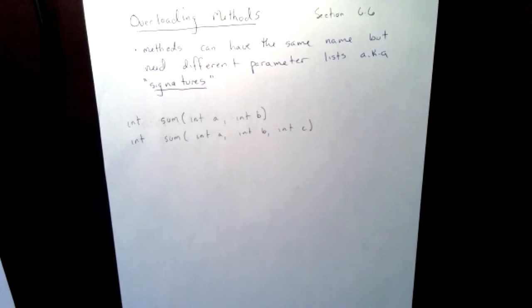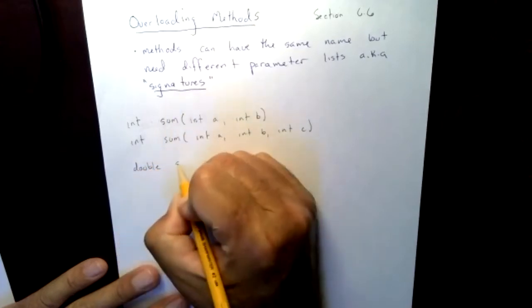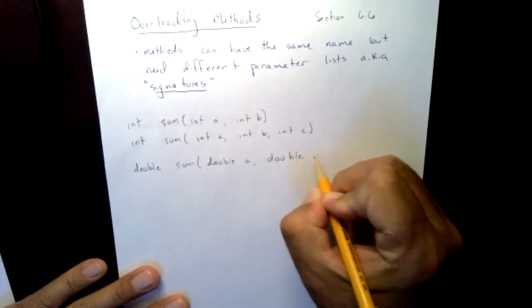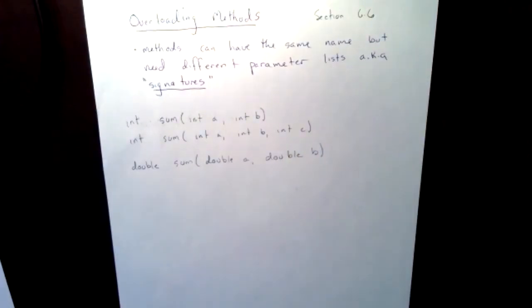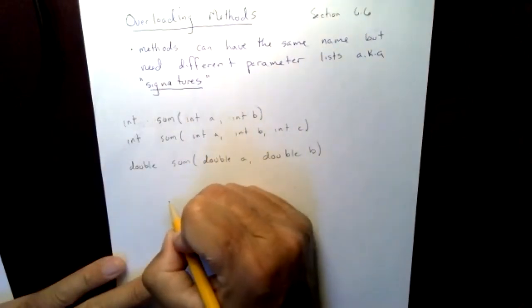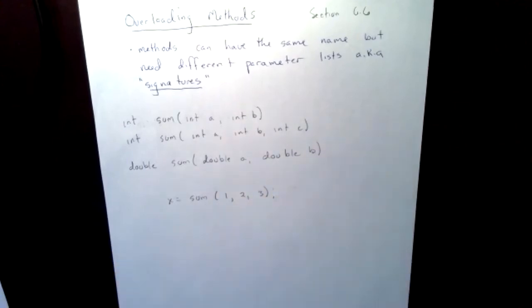So I'm allowed to have this. Could I have another sum that actually will return a double, and inside of this sum, I might have double A and double B? We all know what sum does. It's going to add them together, but this is allowing me to have different uses for the same concept, having different data types. So I'm allowed to overload these methods, just like I did with my constructors. It's the same name, different signatures, and the different signatures are going to help me know which one I use.